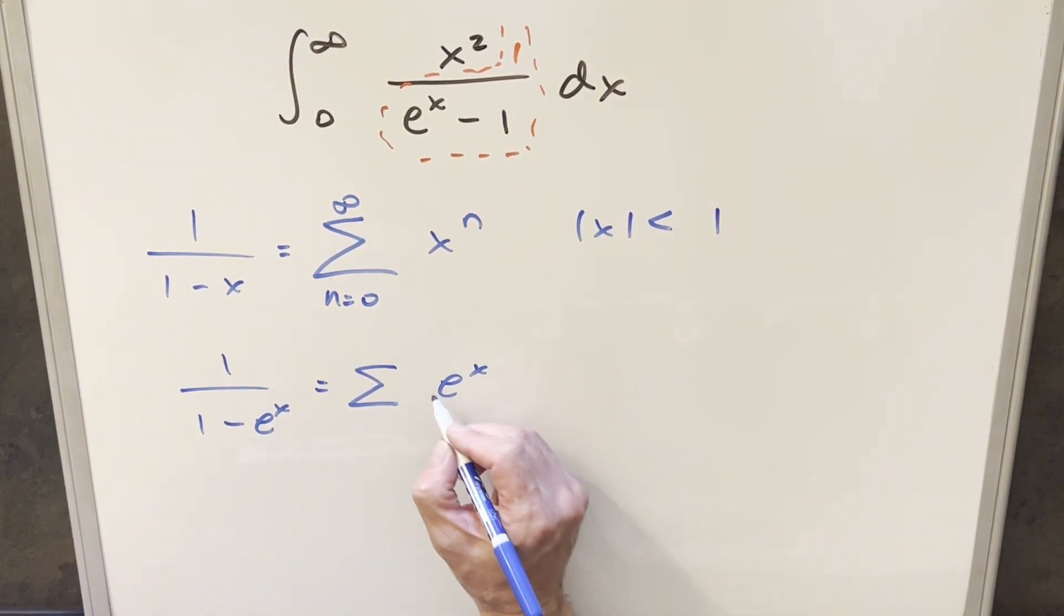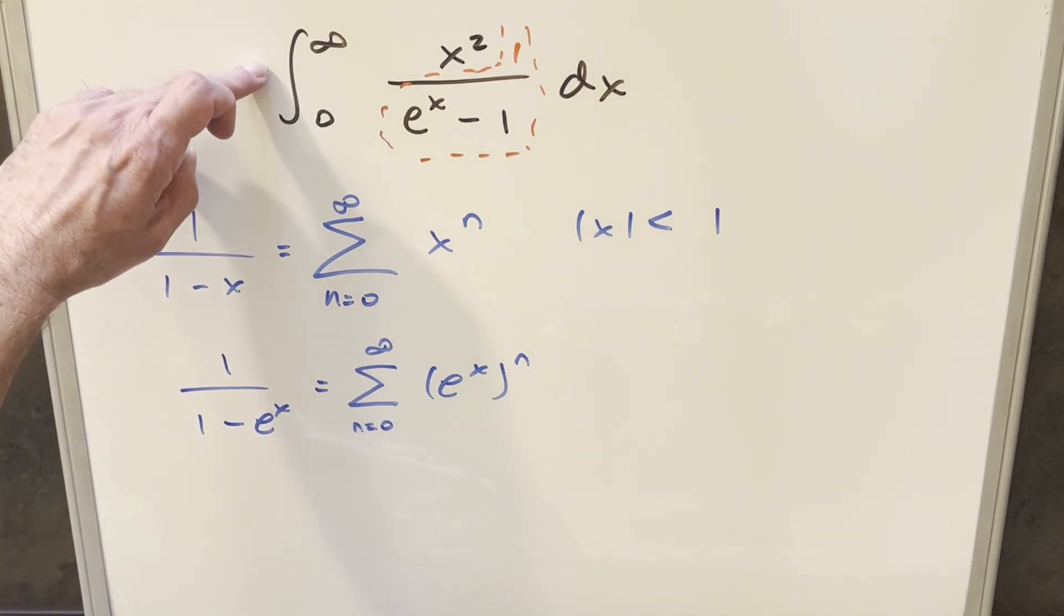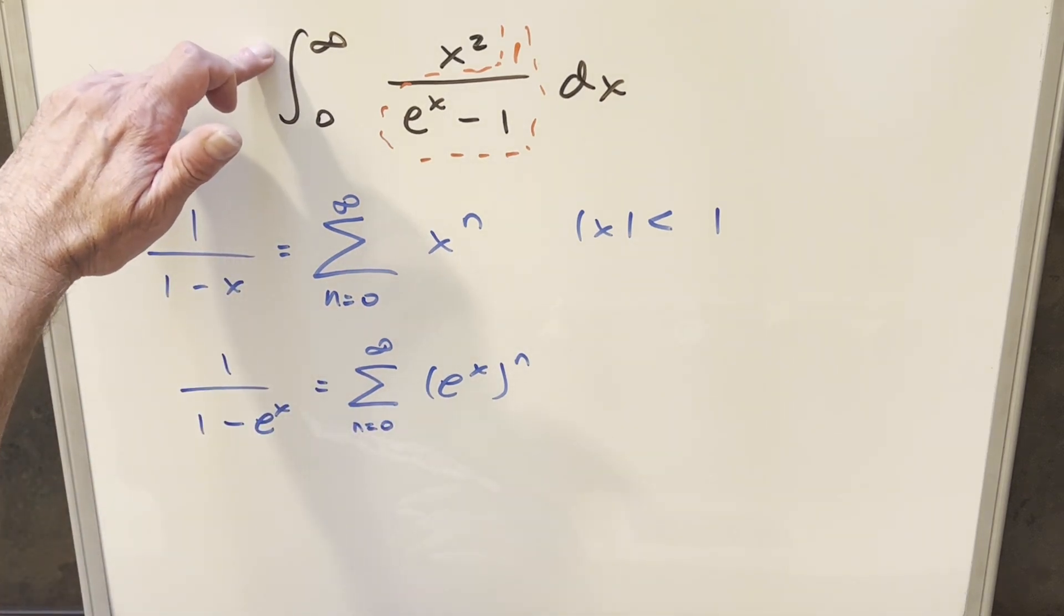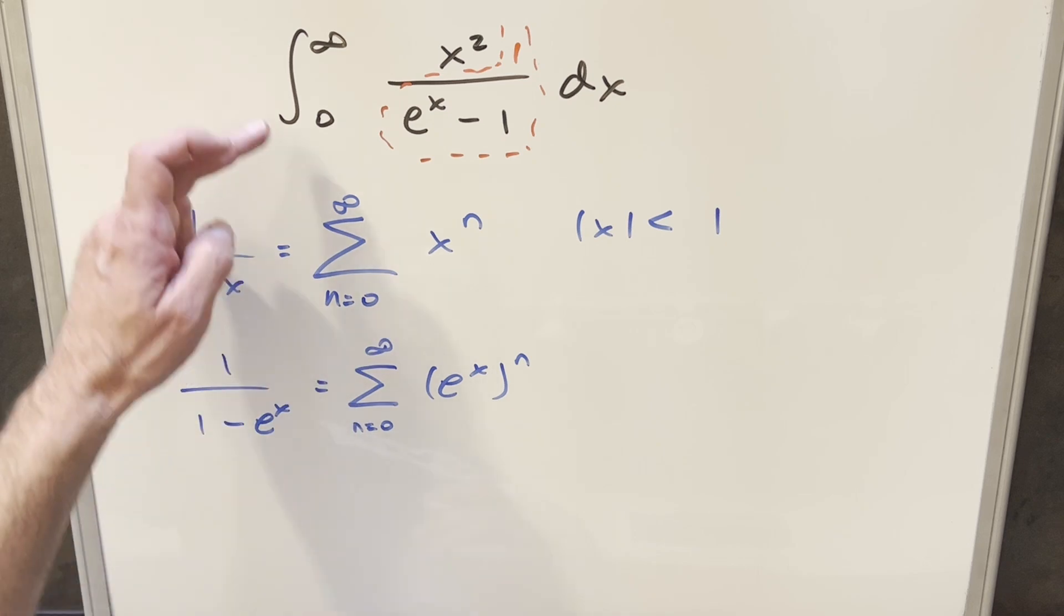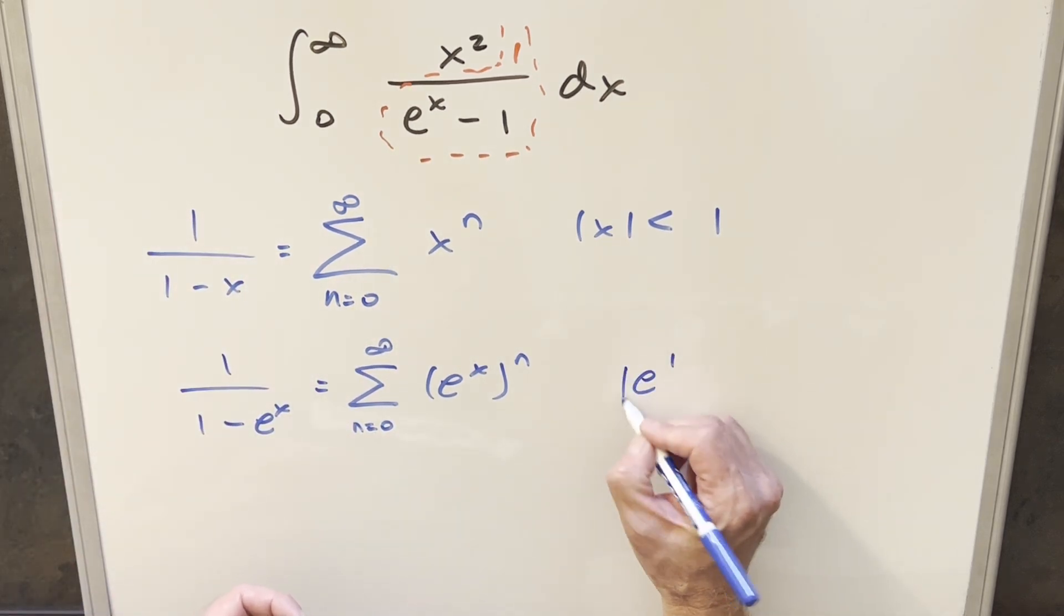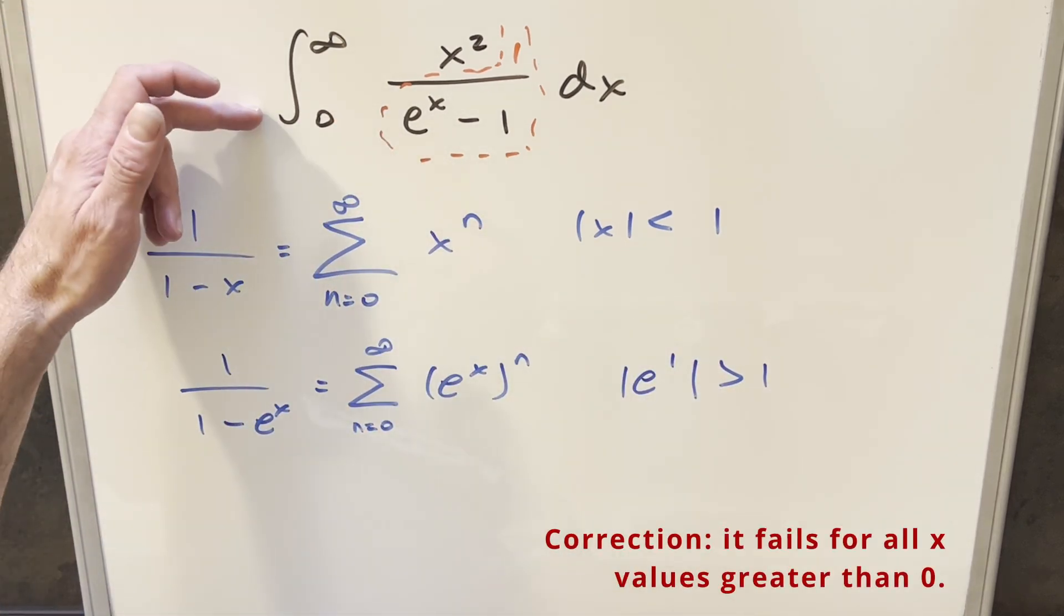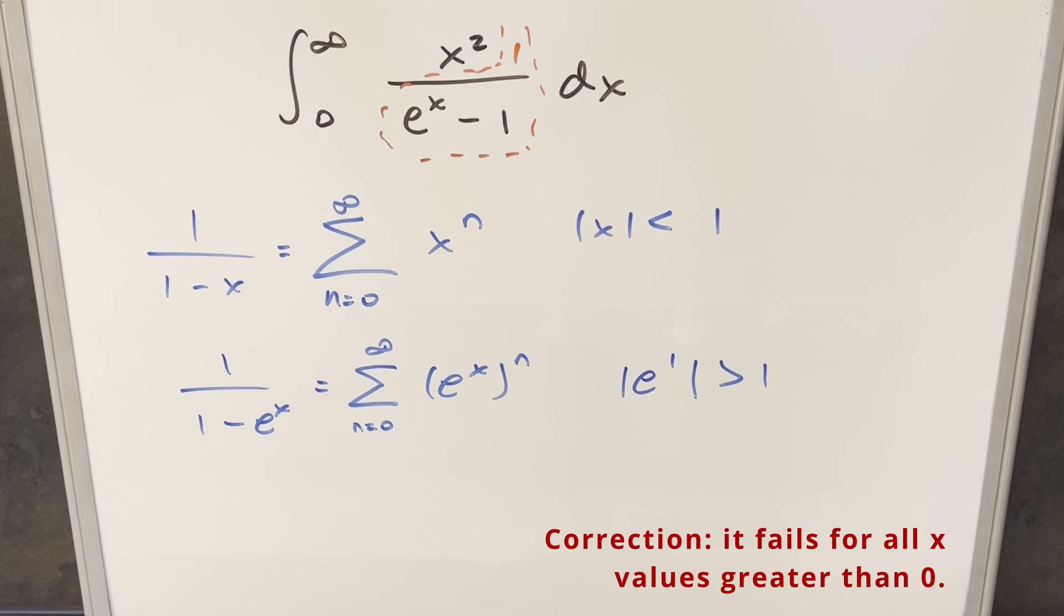So when we come over here, if we try this, we have some idea what our x value is. Just from the bounds on the integral, we're going from 0 to infinity. The problem here is even when x is at 1, even e to the 1, this is already greater than 1. So this is going to fail for almost all the values. It's only going to work for some values between 0 and 1. So because we don't have this convergence, this is going to fail, but we can still kind of try to make this work.